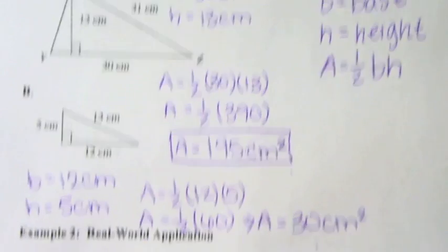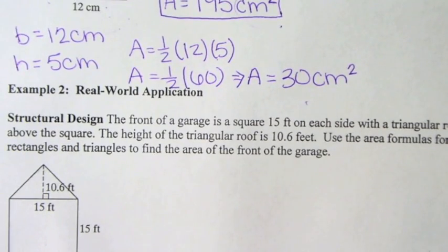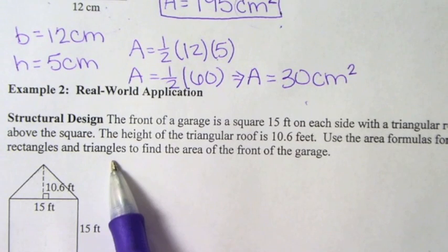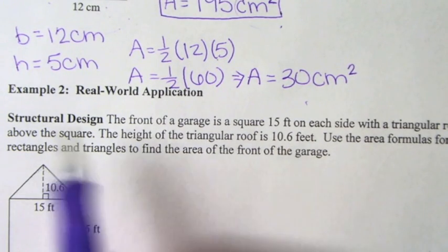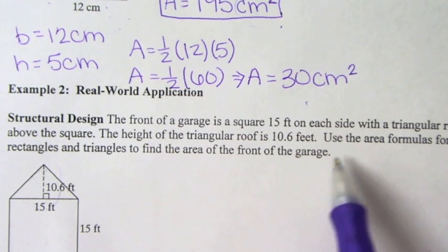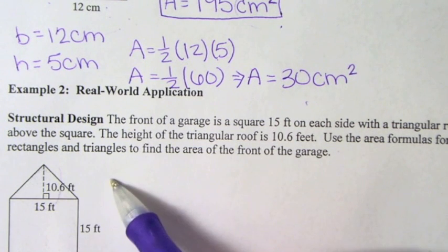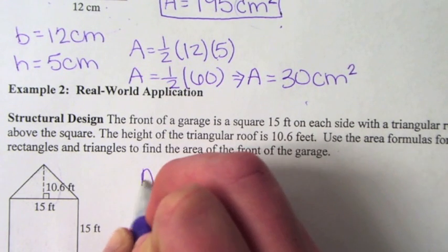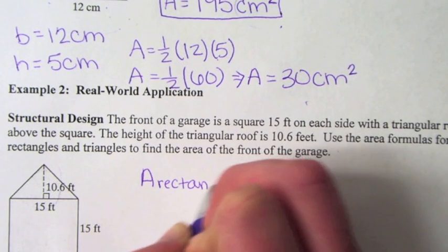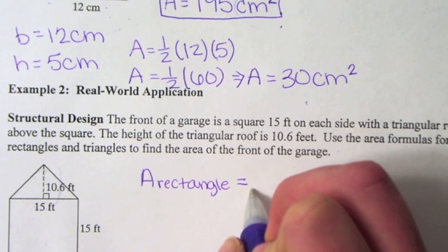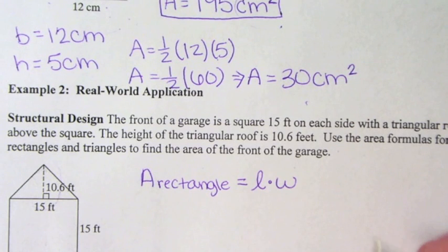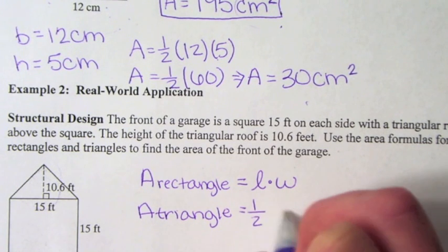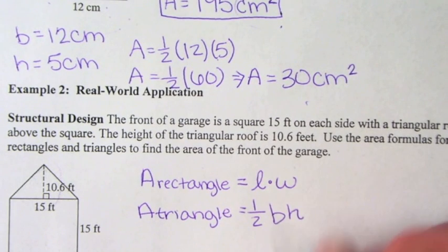Let's put it into use in the real world. The front of a garage is a square 15 feet on each side with a triangular roof above the square. The height of the triangular roof is 10.6 feet, so that's going to be our height. We'll use the area formulas for rectangles and triangles to find the area of the front of the garage. The area of a rectangle equals length times width, and the area of a triangle equals 1/2 base times height. We'll do one piece at a time and then add them together.